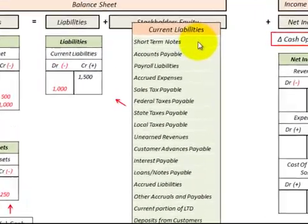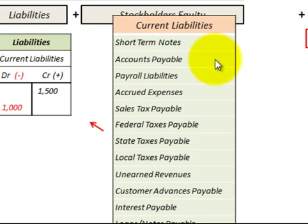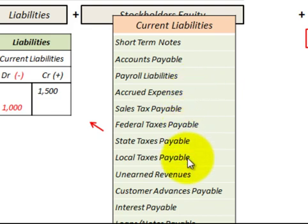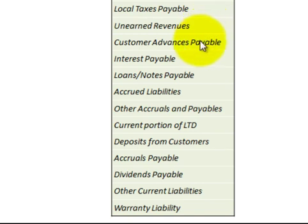Current liabilities would include anything short-term, like short-term notes payable or short-term accounts payable. We'd also have accrued expenses or accrued liabilities, which would require a cash transaction. Scanning through the list, unearned revenues and all those short-term items would be included as cash transactions.